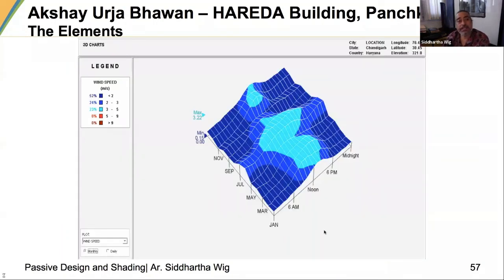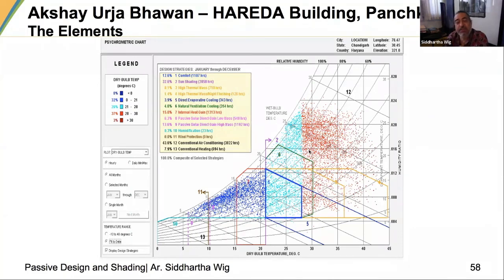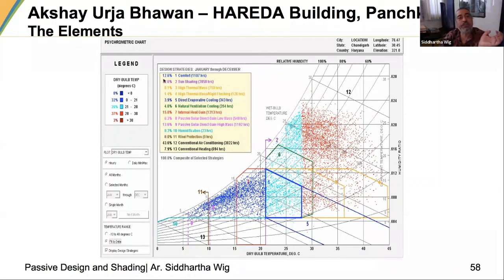We looked at wind speeds through the day and through the year. Most of the higher wind was coming at a time when we were also occupying the building — good for our advantage. We plotted all mean daily temperatures along with humidity on a psychrometric chart and arrived at design strategies from January through December, identifying what was in comfort range and how much could be achieved by shading.